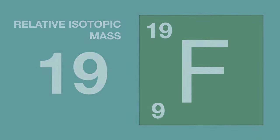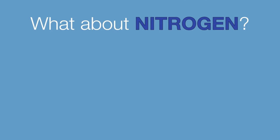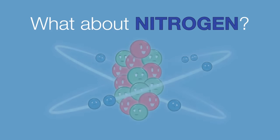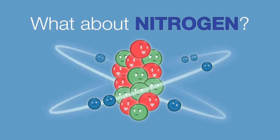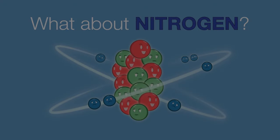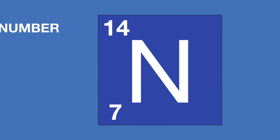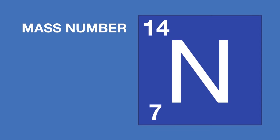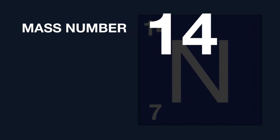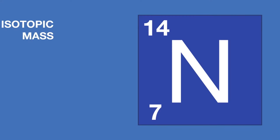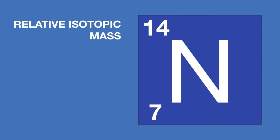Now it's your turn. What about nitrogen? Here's the atom — pause the video whilst you work it out. All we need to do is look up the mass number for nitrogen. It is 14, which means the relative isotopic mass of the nitrogen atom is 14.